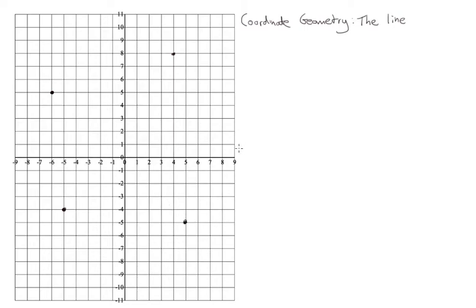The first thing we need to do is look at these two lines. The bottom line going horizontal and the line going vertical. The horizontal line — the line going across — is called the x-axis. It's exactly the same as a number line: it has zero in the middle, then positive numbers increasing to the right, and negative numbers to the left.